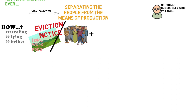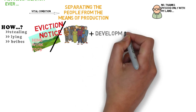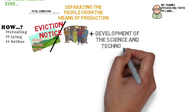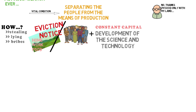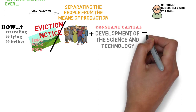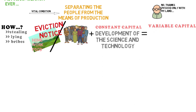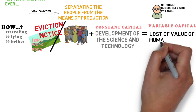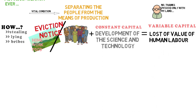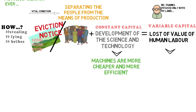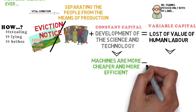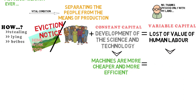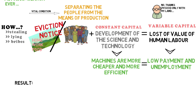So now the people needed to work for the capitalists in order to survive. But science and technology developed rapidly under the pressure of capital, which caused a decrease in variable capital in favor of constant capital. Or what that means is that it's more profitable to buy machines instead of hiring people. The result from that is a loss of value of human labor, low pay, and unemployment.